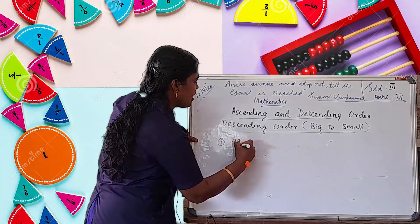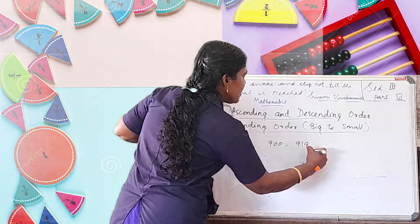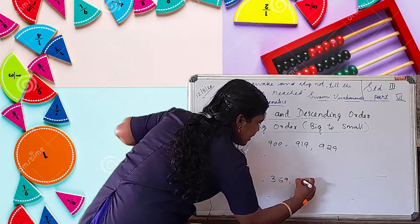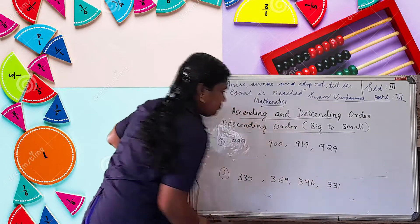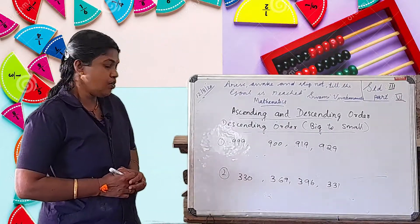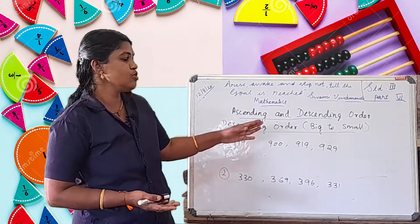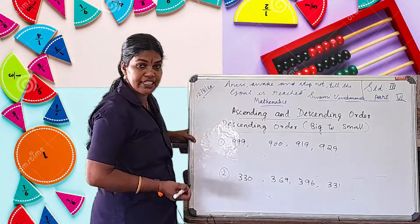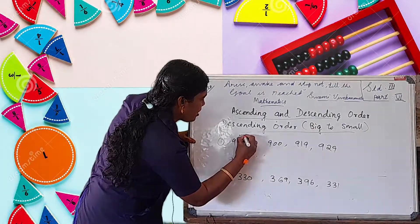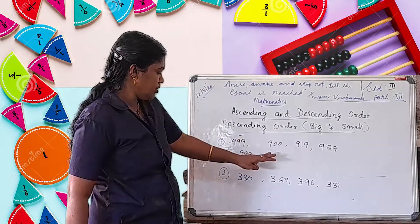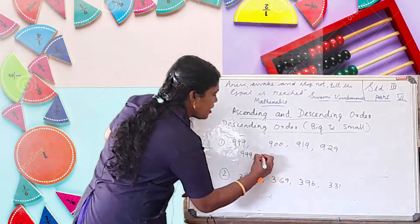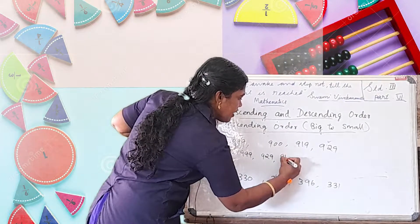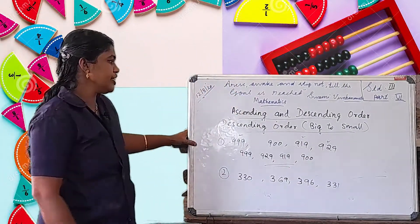Listen to the question: 999, 900, 919, and 929. In descending order, the greatest number is 999, then 929, then 919, and the last number is 900. This is the descending order, or decreasing order.